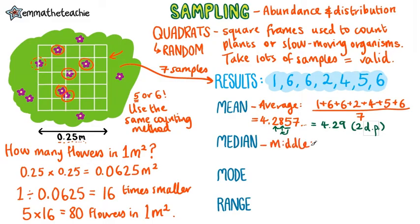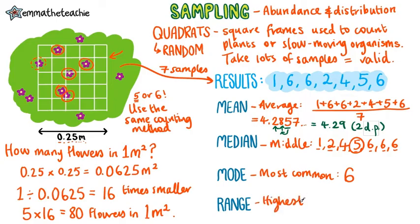The median is the middle value, so we need to write all of our numbers out from smallest to largest, and then we just check which number is in the middle, and is 5. The mode is the most common value, in this case it's 6, as we have 3 of those. And finally the range is the highest value minus, or take away the lowest value, which in this case is 6 minus 1, gives you 5.